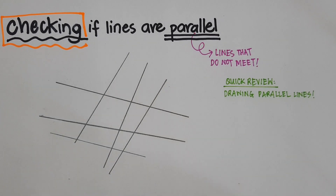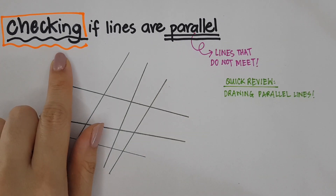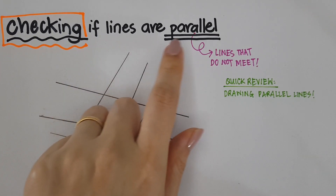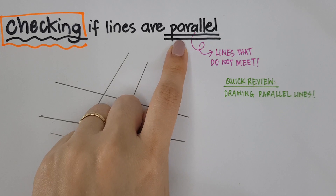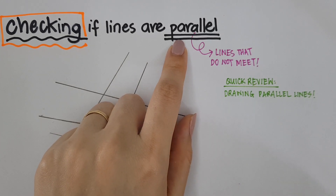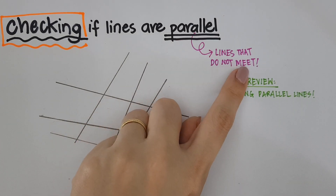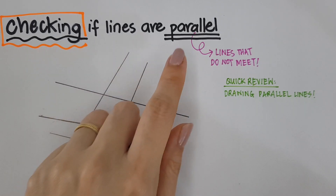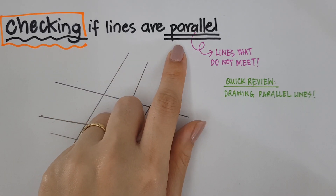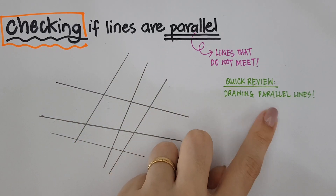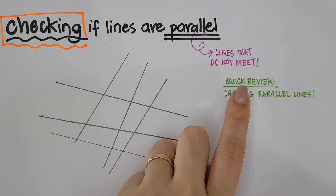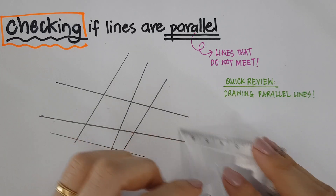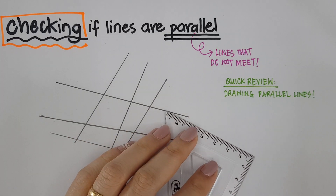Hello kids, today we're going to be talking about how to check if lines are parallel. Parallel lines are lines that do not meet. Now if you want to check whether lines are parallel, it is very important that you know first how to draw parallel lines, so here's our quick review.